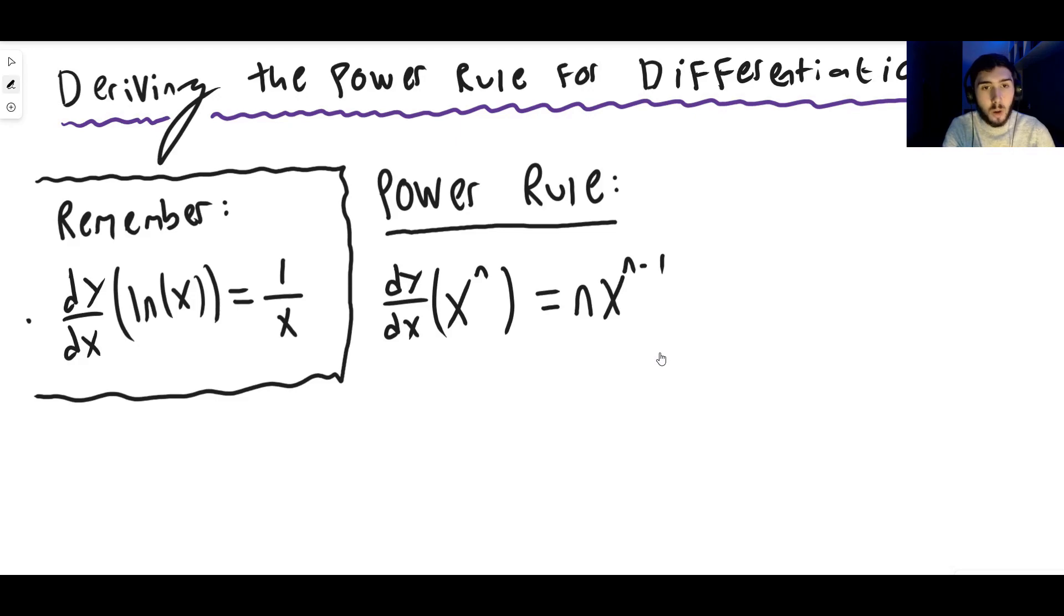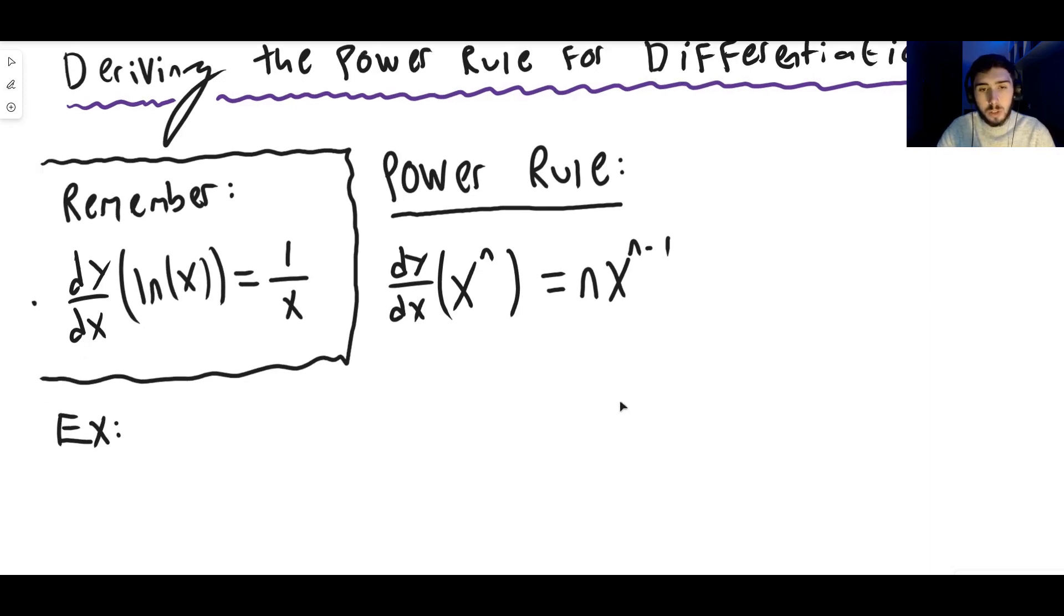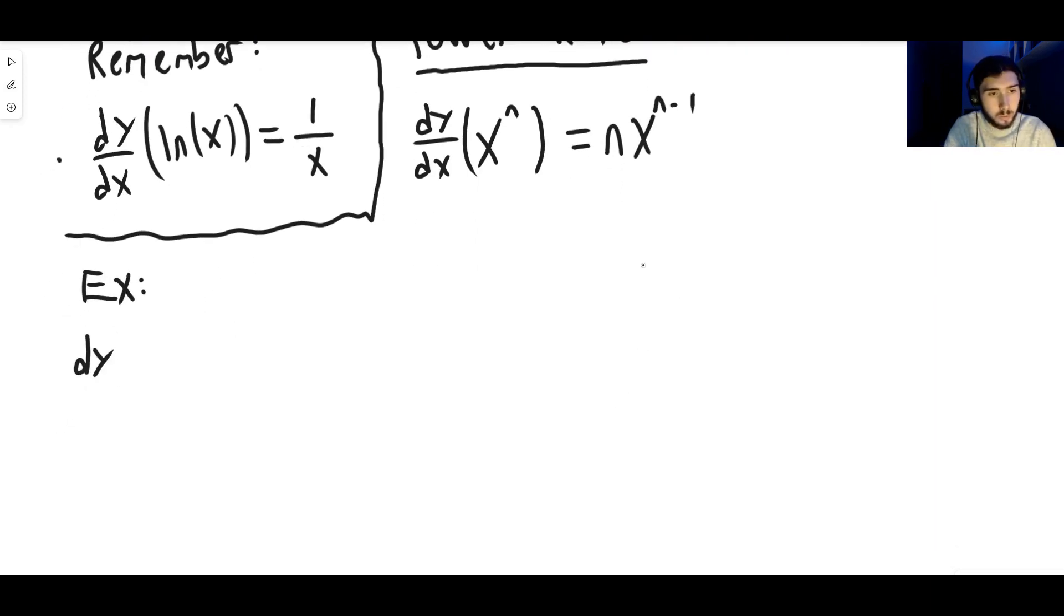So for example, if you wanted to differentiate, let's say we want to find the derivative of x to the power of three. Well, we times by the power and then we have x to the power of the same power but one less. So x to the power of two. That is true. So the derivative of x cubed is three x squared and that is using the power rule.